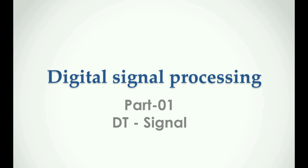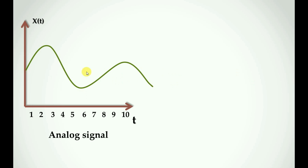We can convert an analog signal into a discrete time signal. An analog signal is a continuous signal because on the x-axis we have time and on the y-axis we have the signal value. We can see the signal function — this signal is a continuous signal, and at each and every time the signal exists. That means there is no discontinuity. That is why I am saying it is an analog continuous signal — at every point in time our signal value exists.